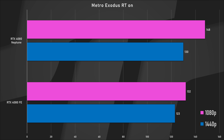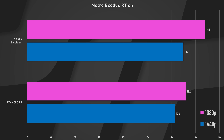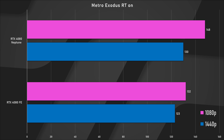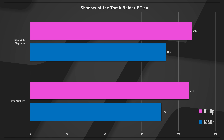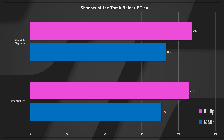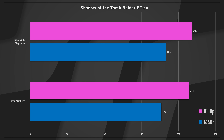In Metro Exodus with RT on, at max settings, the Neptune hits 148 FPS versus 132 in 1080p — fairly measurable — versus 130 and 123 in 1440p. Although those numbers look very obvious in chart format, when you're playing the game without an FPS counter, you'll have a very hard time discerning which one is hitting 148 and which is hitting 132. Shadow of the Tomb Raider with RT on: both cards are essentially engine-limited at 218 and 214 for 1080p, and 183 and 177 in 1440p. You're really not going to notice those five FPS differences.